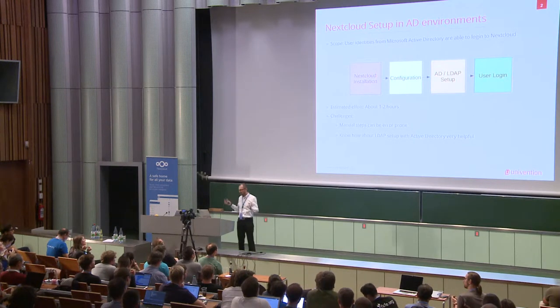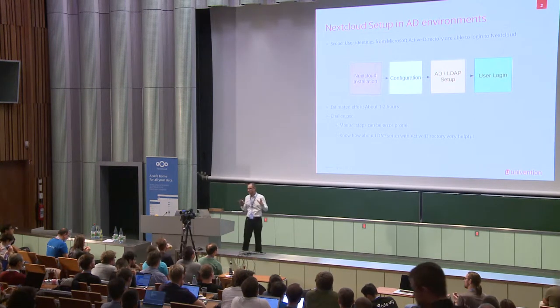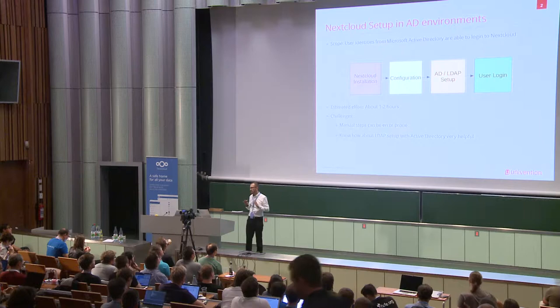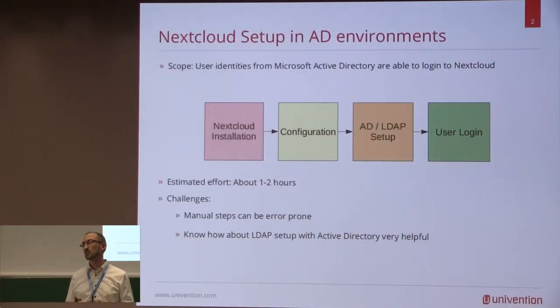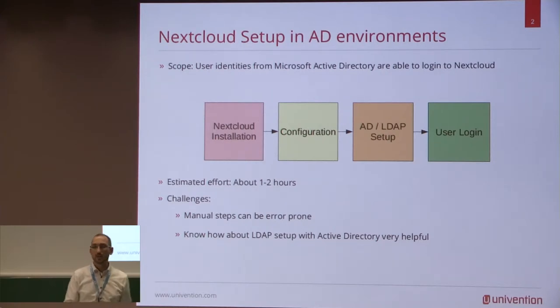Typically, the first thing is the scope. The scope is: user identities are in your Microsoft Active Directory and you want those users to be able to log into Nextcloud. The usual step is you set up Nextcloud, which typically involves a Linux server like Debian or Ubuntu. You install Nextcloud on it, do all the configuration for the LDAP setup and Active Directory, and finally the user can log in.